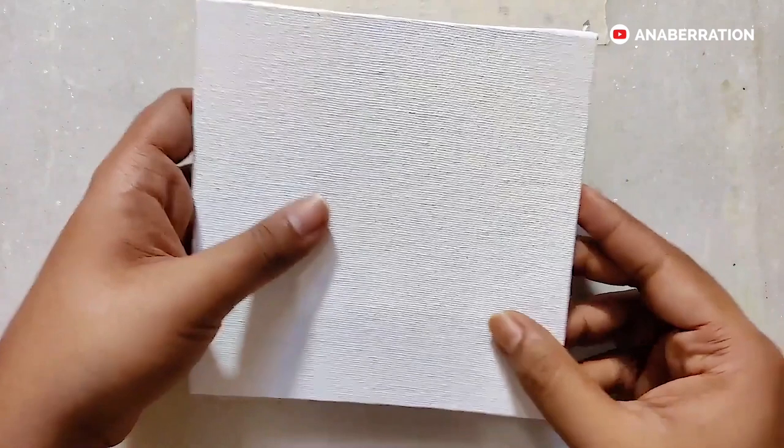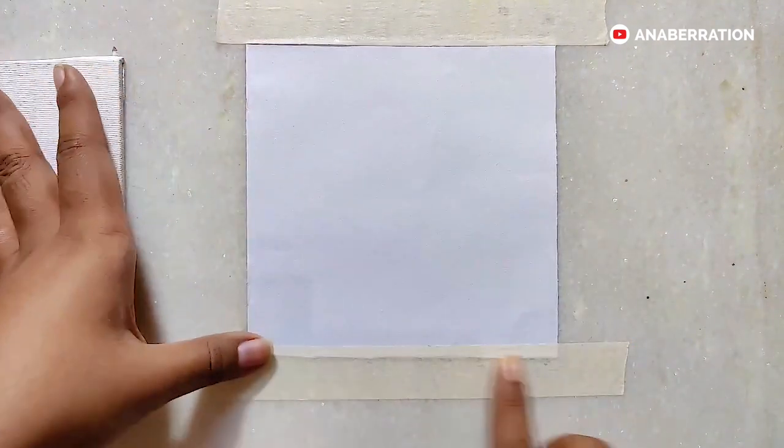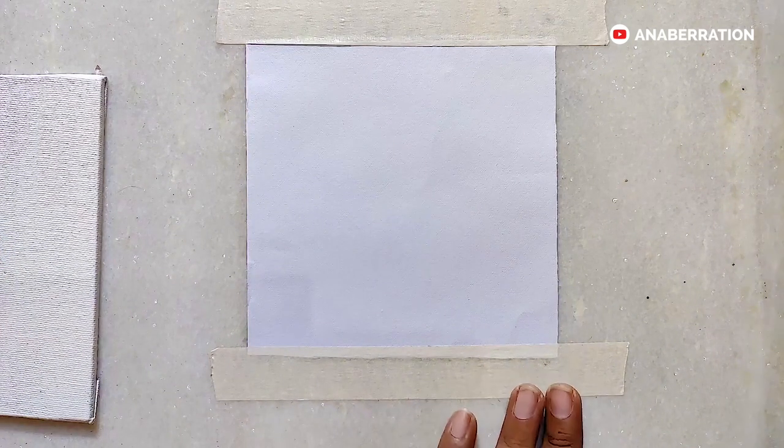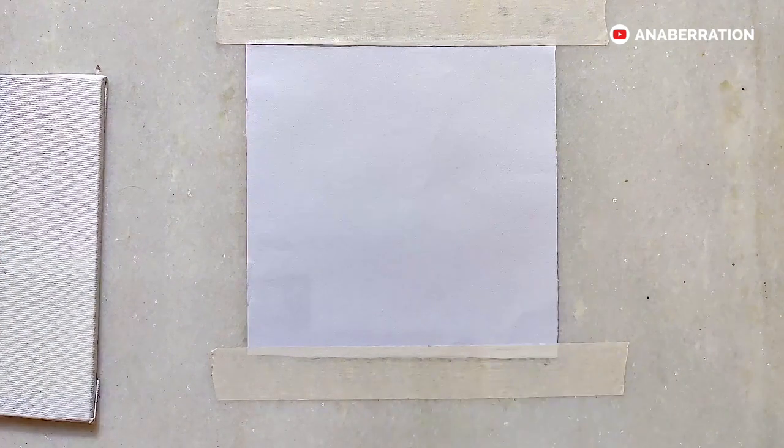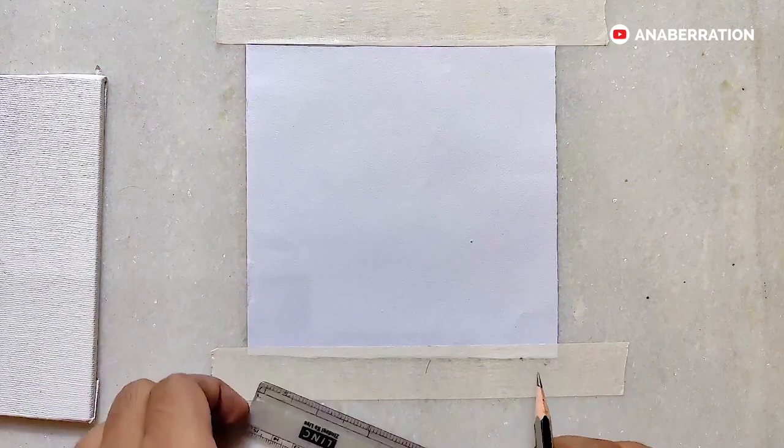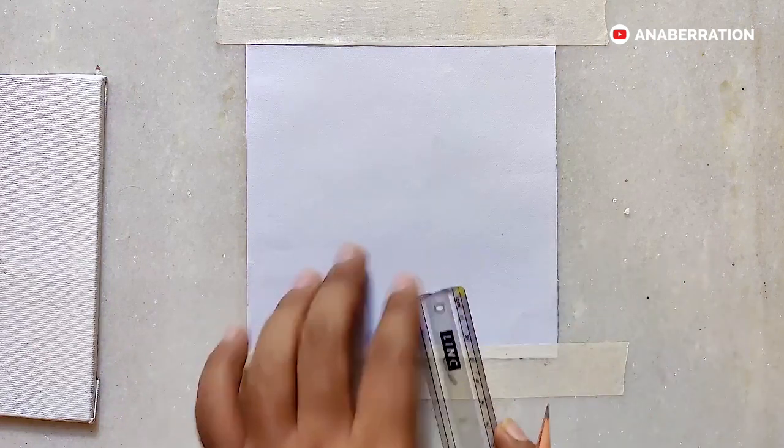This is my canvas which is a 6 by 6 inch canvas. For that I am taking the same size of paper sheet and adding it with the help of masking tape. Now we will start drawing. For that first I am taking a 0.5 centimeter border and with the help of a transparent scale and a pencil I will just make the border on the four sides.